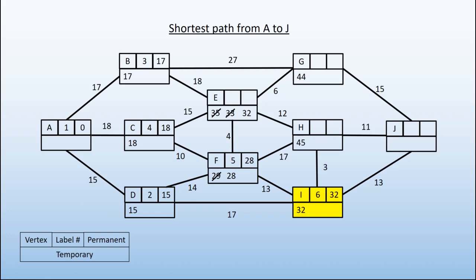We can go from I to H in 35. 32 plus 3 is 35, which beats the 45, so we cross that one out and replace it with the 35. We can also get to J in 45. Now, even though we are trying to get from A to J, just because we've got to J at this point does not mean we've finished.